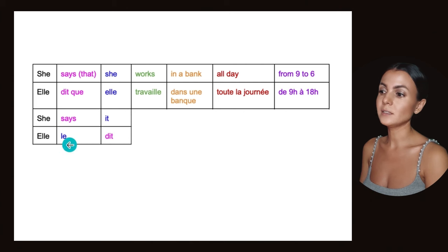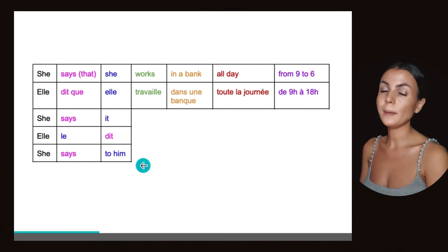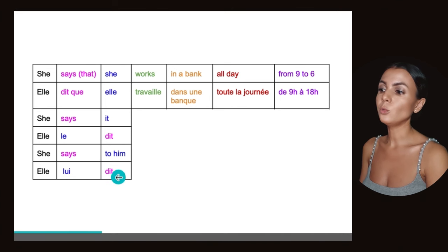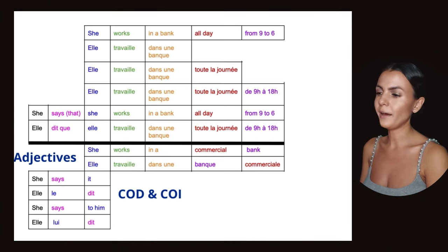She says that, she says it - Elle le dit. She, it, says. And same for indirect pronoun: She says to him. In French, elle lui dit. So she, to him, says - Elle lui dit. So we have adjectives and we have COD, COI, where the structure is not the same as in English.